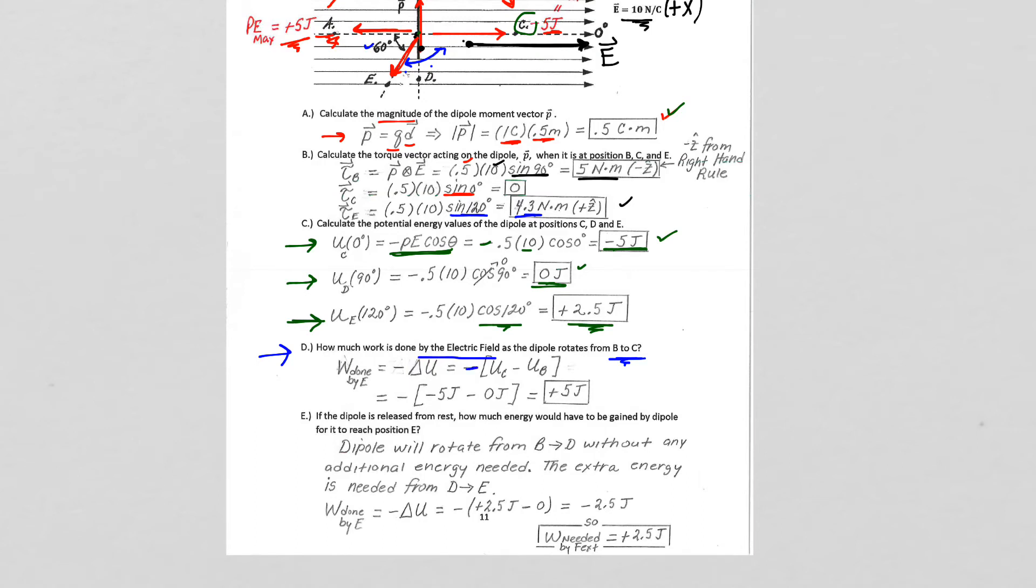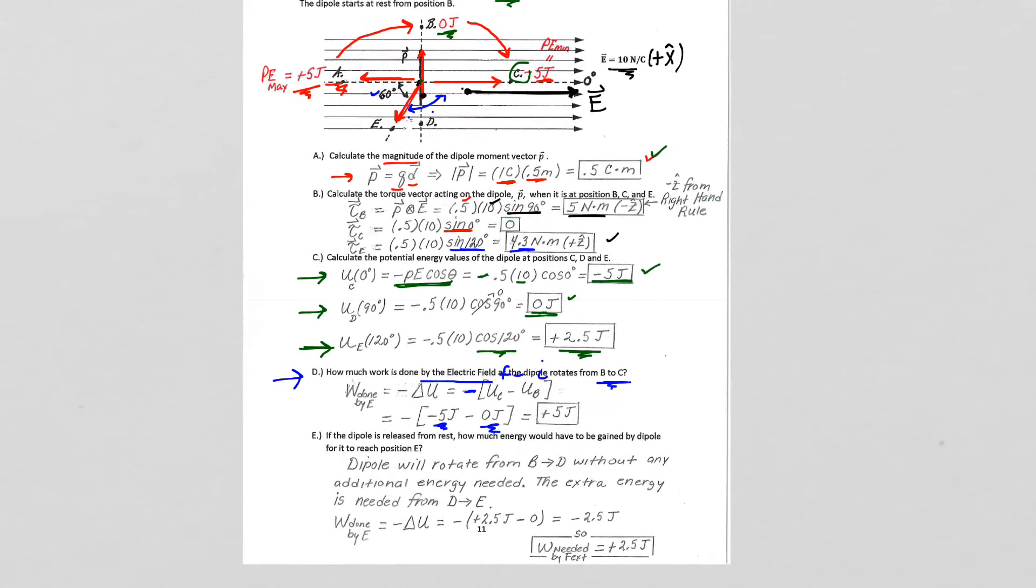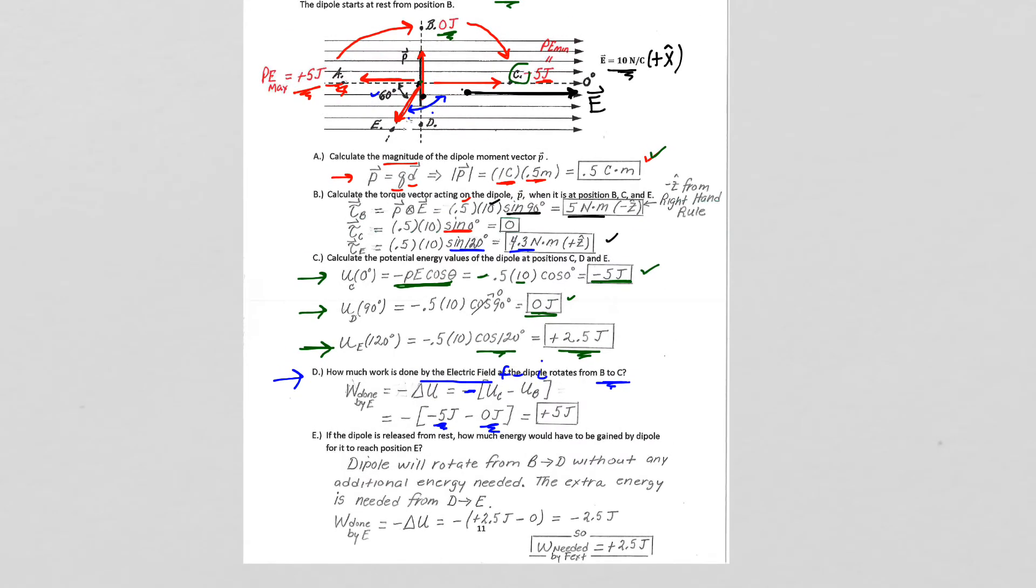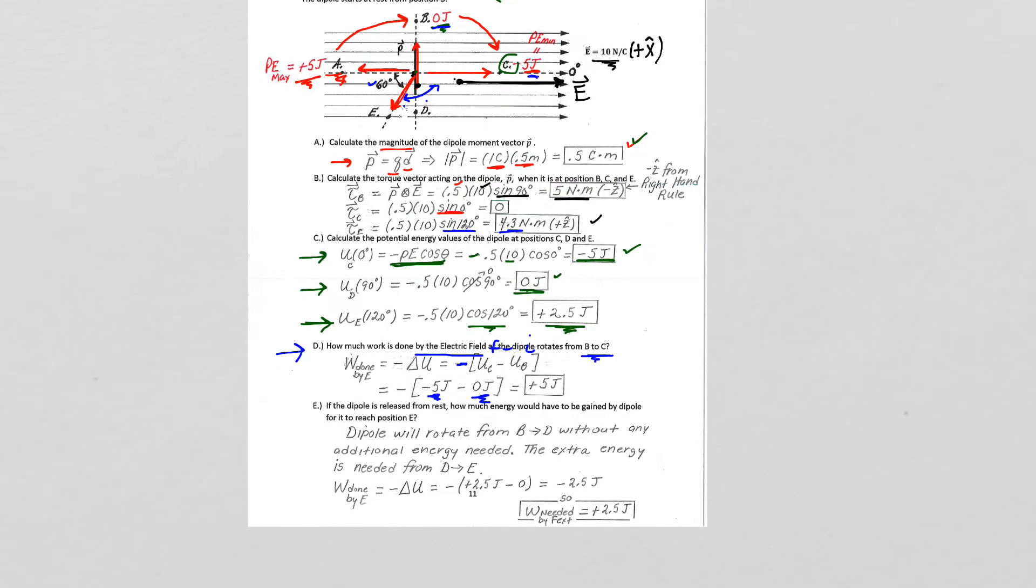Negative, final minus initial. The initial is 0. The final is minus 5. So there you have it. Our equation tells us what we could just look at spatially and see we went from 0 and dropped 5, so our loss of 5 joules of potential energy became a positive 5 joules.